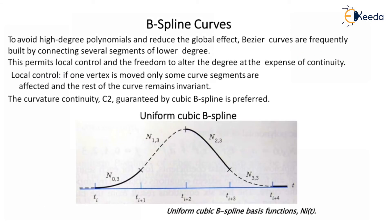To avoid high degree polynomials and reduce the global effect, the Bezier curves are frequently built by connecting several segments of lower degree. This permits a local control and the freedom to alter the degree at the expense of continuity.